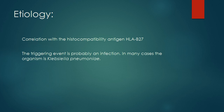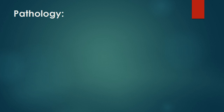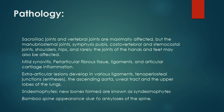In many cases the organism is Klebsiella pneumoniae. Pathology: The sacroiliac joints and vertebral joints are maximally affected, but the manubriosternal joints, symphysis pubis, costo-vertebral and sternocostal joints, shoulders, hips, and rarely the joints of the hands and feet may also be affected.